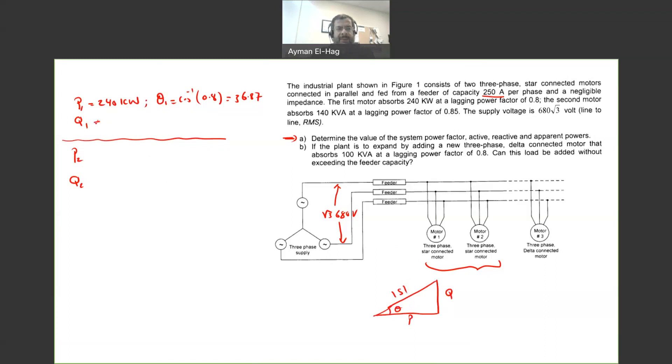So your Q1 is basically P1 tan theta 1, and if you substitute, you will find this is equal to 180 kVAR.